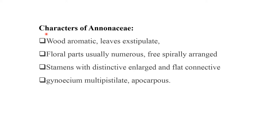To sum up the Annonaceae family, here are the salient features. First, wood is aromatic. Leaves are exstipulate. Floral parts are usually numerous, free, and spirally arranged. Stamens are distinctive with an enlarged, flat connective. Gynoecium is multi-pistillate and apocarpous. These are all the salient features of the Annonaceae family.